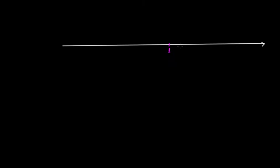Let's take a number line where we are only representing natural numbers. Starting from one, then two, three, four, five, six, seven, eight, nine, ten, and so on - it will continue. This is a representation of natural numbers on a number line.